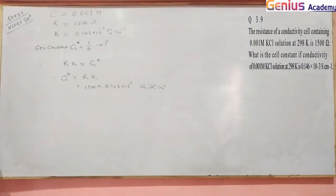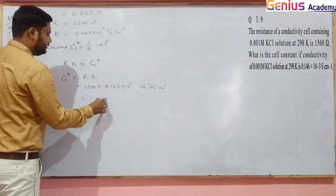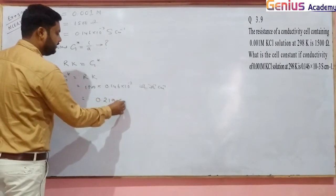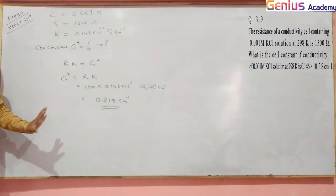It comes to 0.219 per centimeter. This is our answer for cell constant. The numerical calculation is your work - I'm just showing the method here. See you next week, thank you!